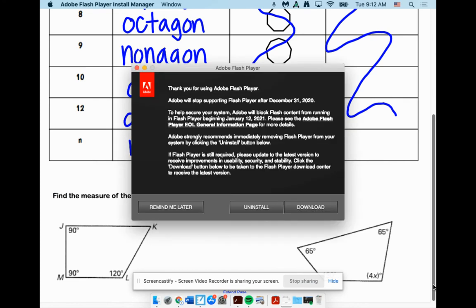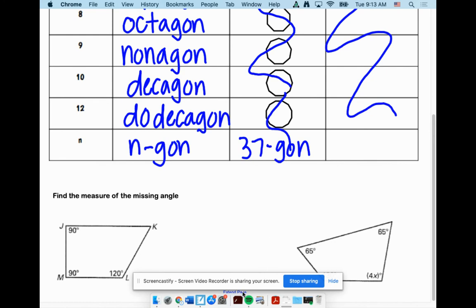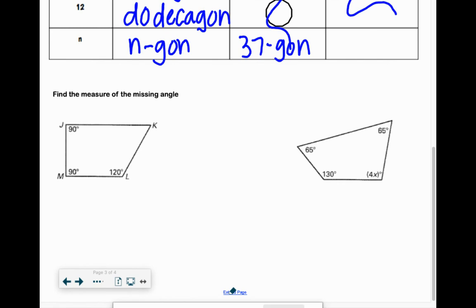And the last thing we are going to do is just finding a missing angle of a quadrilateral. It's just like finding the missing angle of a triangle but instead of subtracting from 180 we're going to subtract from 360 because there's four angles. Okay, so anyone need a calculator?